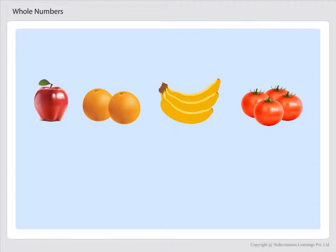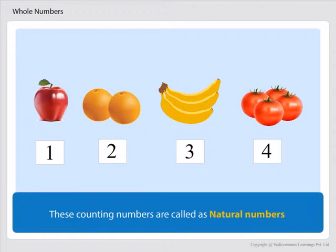When we start counting the numbers, we use 1, 2, 3, 4, and so on. These counting numbers are called natural numbers in mathematics.